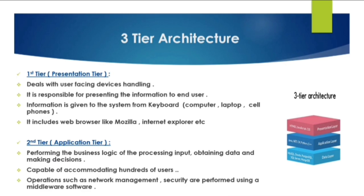The second tier is the application tier. It performs the business logic of processing input, obtaining data, and making decisions. It is capable of accommodating hundreds of users. Operations such as network management and security are performed using middleware software.